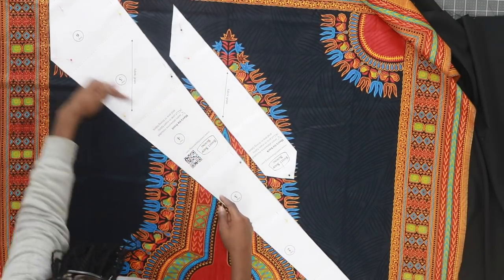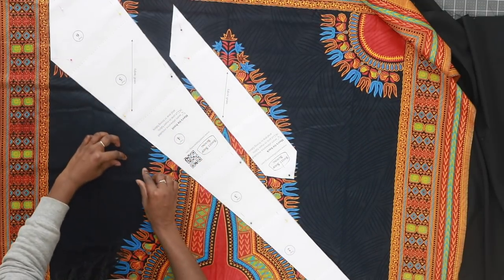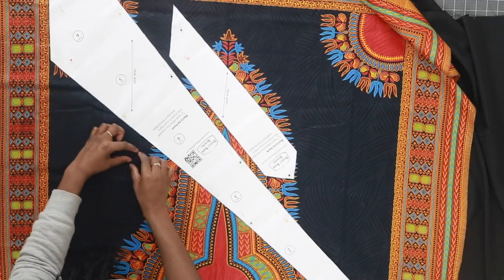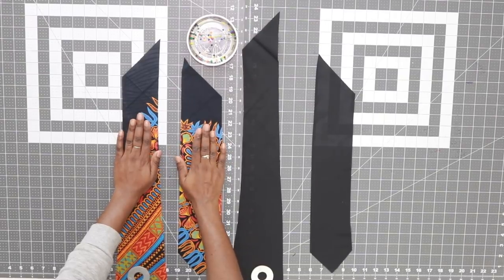So the tie is actually being cut out on the cross grain because that's where it gives it the most stretch. Now you have the front tie and you have the back tie piece.